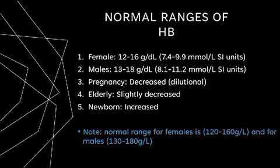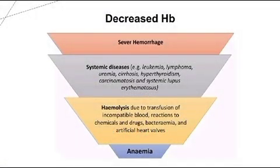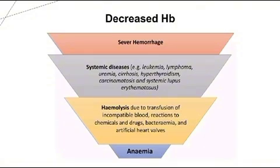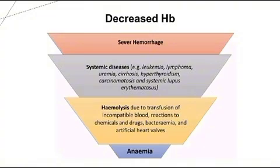In pregnant women hemoglobin is decreased; in elders it is slightly decreased; in newborns it is increased. Causes of decreased hemoglobin include: severe hemorrhage; systemic diseases like leukemia (increased concentration of abnormal blood cells); lymphoma (lymph tumors originating from lymphocytes); uremia (increased concentration of urea in blood); cirrhosis (liver failure); hyperthyroidism (increased thyroid hormone); carcinomatosis (cancer cells spreading from original tumor throughout the body); systemic lupus erythematosus (immune cells attacking healthy tissue); and hemolysis (breakdown of RBCs due to incompatible blood transfusion, chemicals, drugs, bacteria, or artificial heart valves).